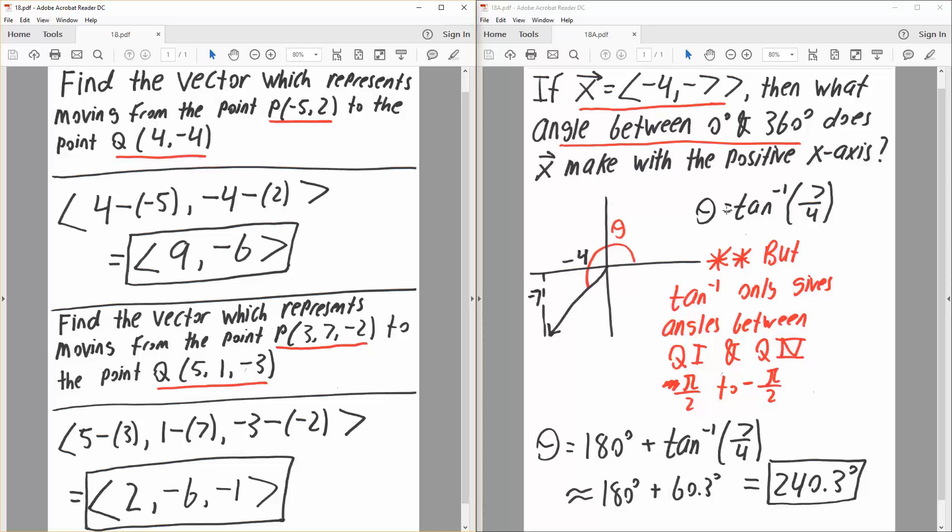But for our actual angle we know it's going to be greater than 90 degrees. So what we need to say is we first do tan inverse 7 over 4, and when we do this in the calculator we would get 60.3 degrees. But 60.3 degrees is essentially this angle right here, so we say 180 plus 60.3, and the final answer would be 240.3 degrees.